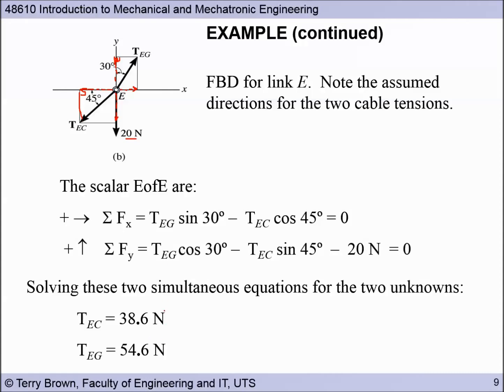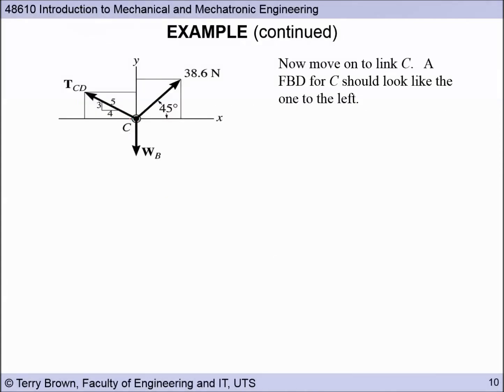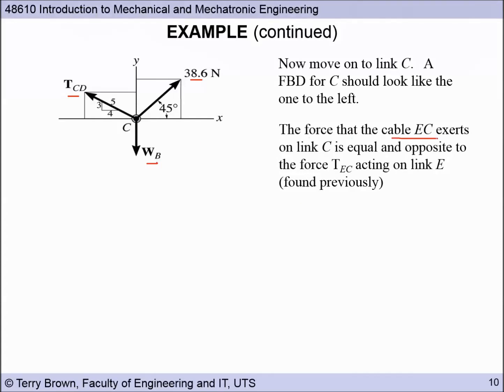So now we can move on to the free body diagram of particle C or link C. So now we've got our force 38.6 newtons. Now move on to link C. A FBD for C should look like the one to the left. The force that the cable EC exerts on link C is equal and opposite to the force TEC acting on link E found previously. The scalar equations of equilibrium look like this.